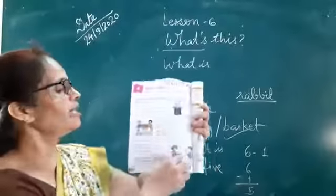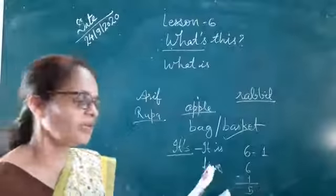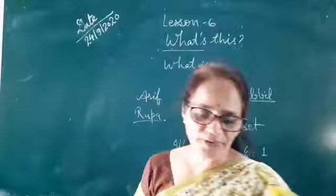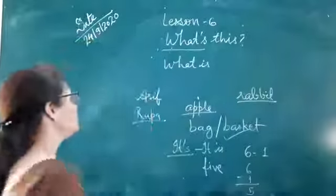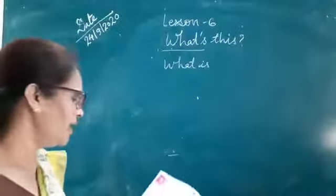So children, you all have to write this chapter and you have to write difficult words. Now children, underline the words I will say. You have to underline in the book and write down in your copy also. Now write down.